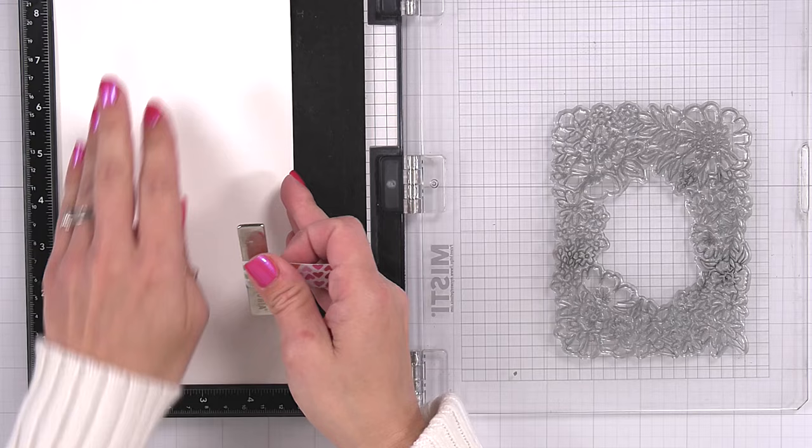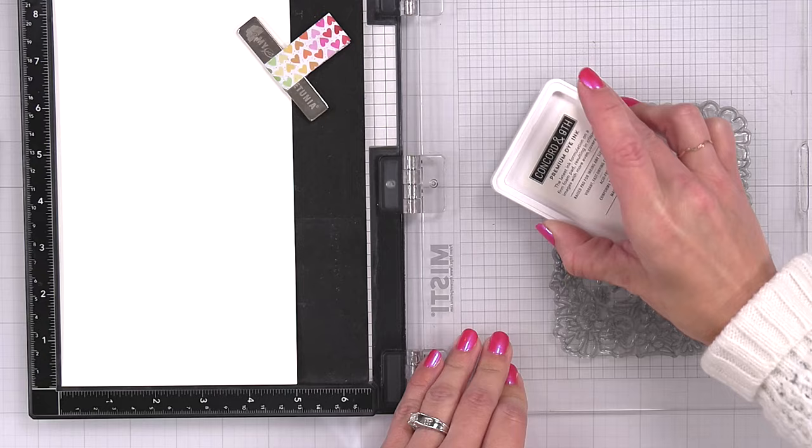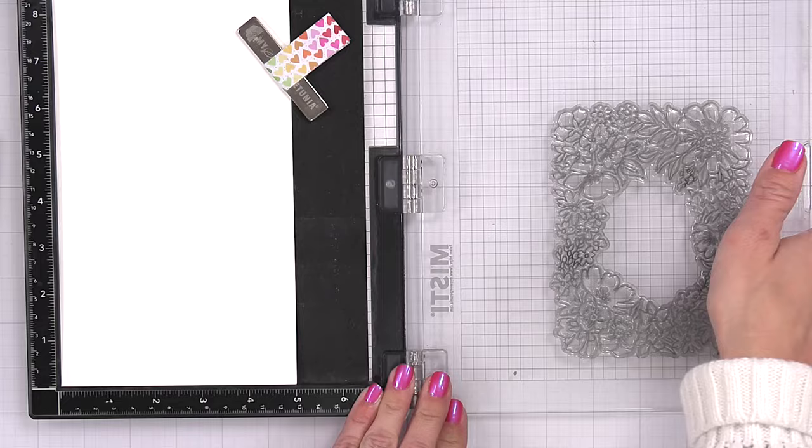Before I do any ink blending, I'm going to take that large floral image and stamp it down onto some smooth white cardstock. I am going to be stamping it in a light grayish or light brownish ink. This is Pebble from Concord & 9th.